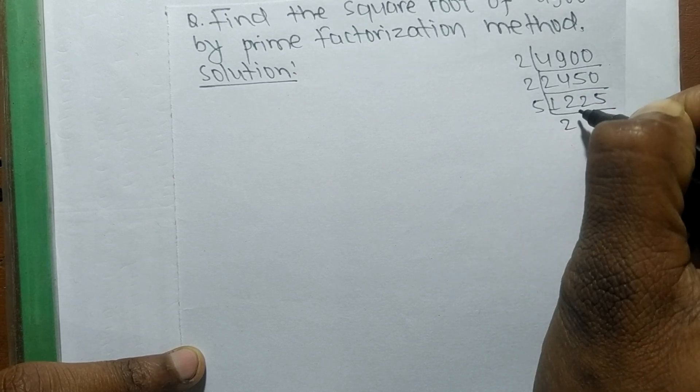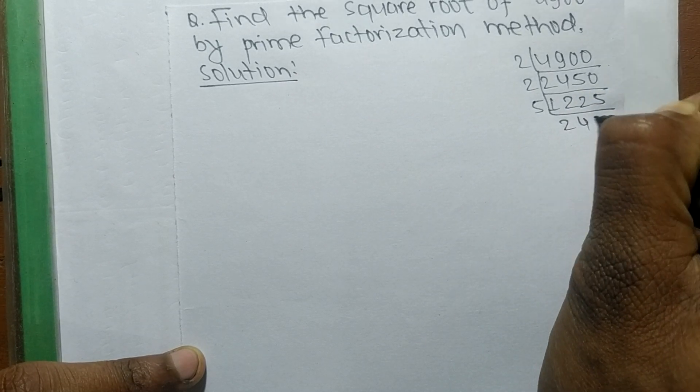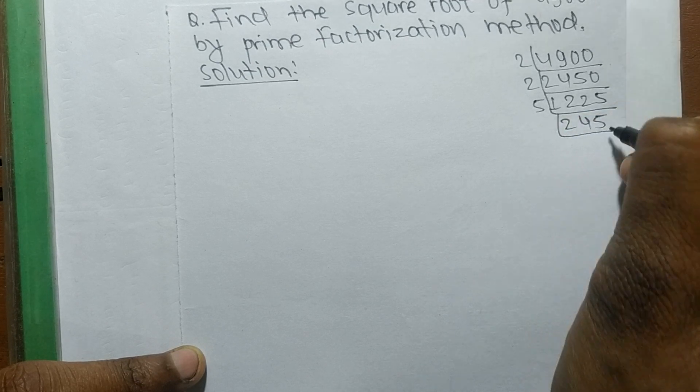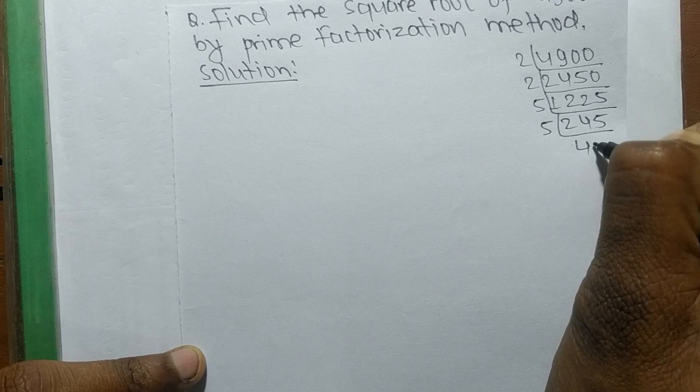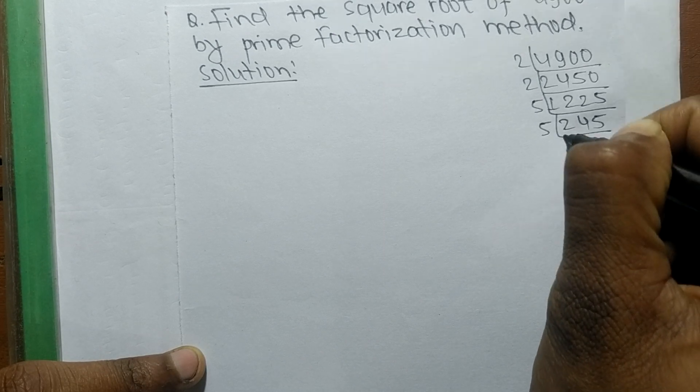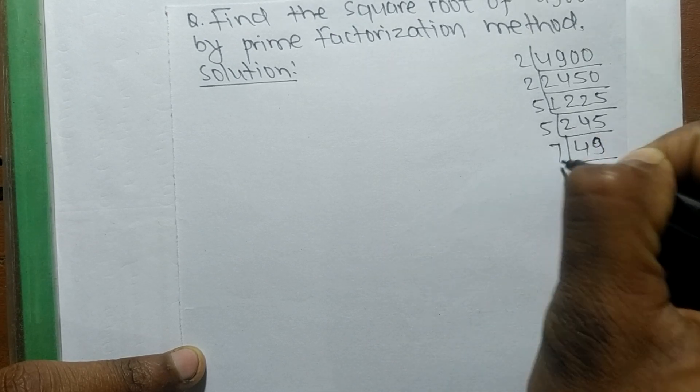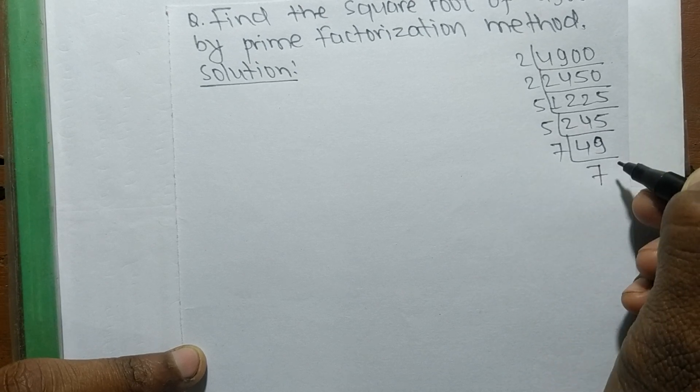We have 5 times 49 equals 245. So we factor out 5, leaving 49. Then 7 times 7 equals 49, so we have found all the prime factors of 4900.